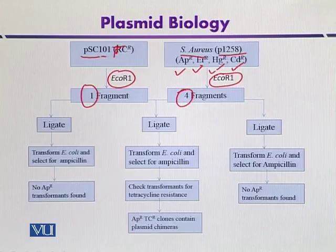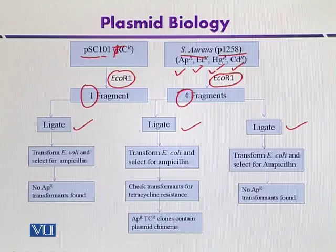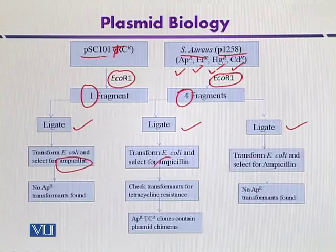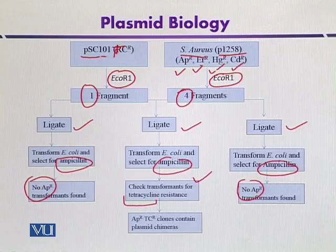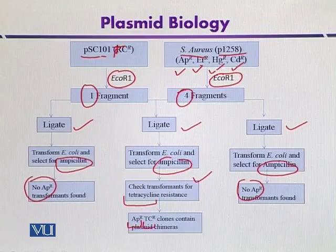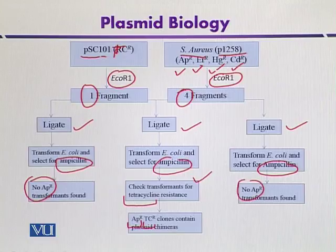Then they can be ligated with the help of DNA ligase. After introducing the ligated DNA into E. coli, they can be screened for the presence of ampicillin resistance. In some cases, there will be no ampicillin resistance. Where ampicillin resistance is present, the transformants are further screened for tetracycline, so that the genes from Staphylococcus plasmid — for example, ampicillin resistance — can be combined with tetracycline resistance from PSC-101. This is one example of cloning genes from other plasmids into PSC-101.